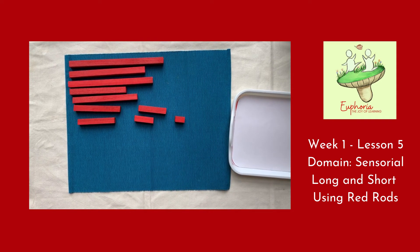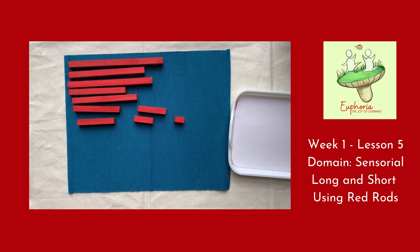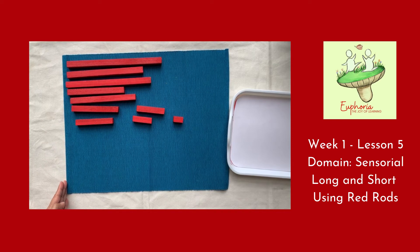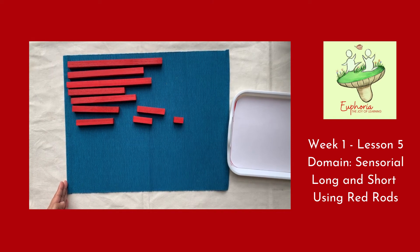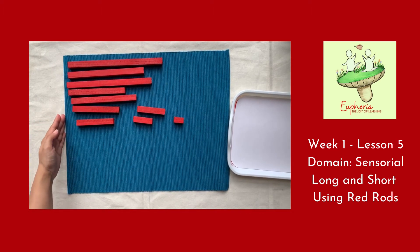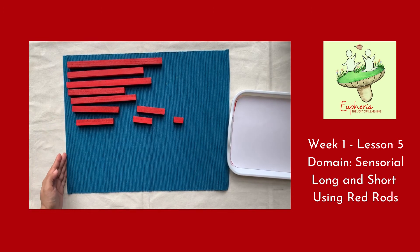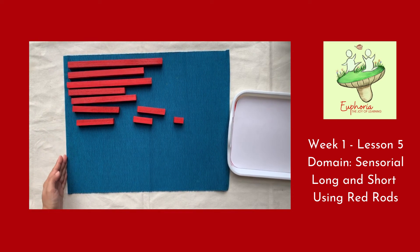Now we will start arranging the rods from the shortest to the longest. We will use the edge of the mat as a reference or as a guideline. This helps the child also to understand that one edge of the rods is flushed together and it's all in a straight line.